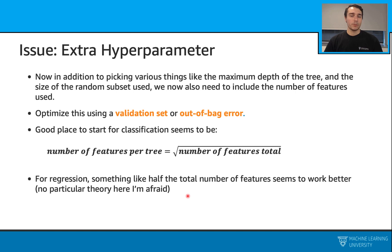We also have an extra hyperparameter here. Just like the regular parameters maximum depth of the tree and the size of the random subset that we use, we will also have another parameter here that decides the number of features. And just like any other hyperparameter, we will also optimize it using a validation set or out-of-bag error.